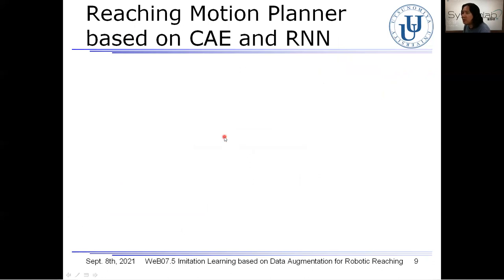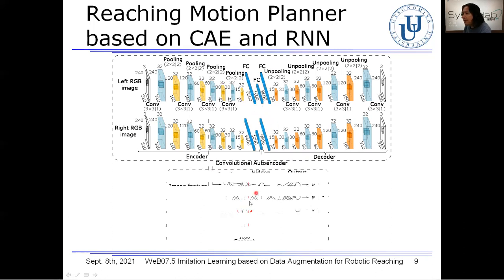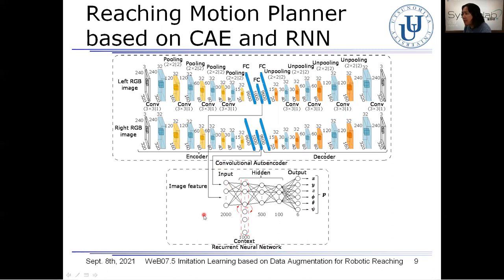Let me explain the reaching motion planner based on a CAE — convolutional autoencoder — and RNN — recurrent neural network — in detail. The upper part of the structure is composed of the convolutional encoder, where the image features are extracted. The lower part is composed of the recurrent neural network. The extracted image features are then fed as inputs into the RNN, and from this RNN, the hand position is derived as the output and sent to the robot.